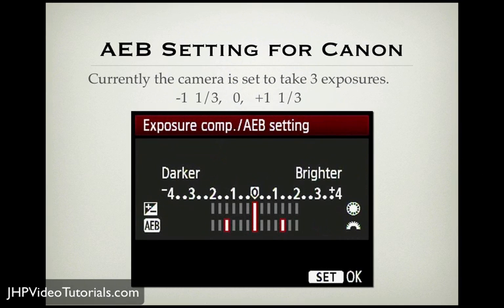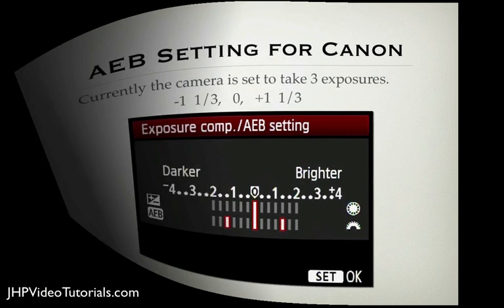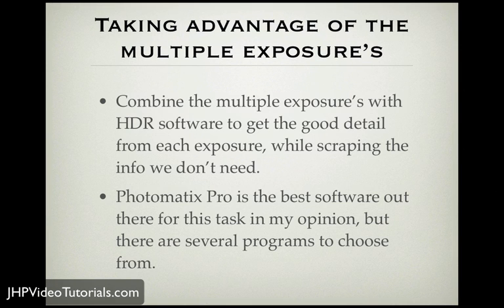Here's what it looks like on the camera screen when you set auto exposure bracketing. When the camera fires, it takes a negative one and one-third exposure, a zero exposure (normal exposure), and a plus one and one-third exposure shot. To take advantage of those multiple exposures, once you get them, you have to combine them with HDR software. The best software out there, in my opinion, is Photomatix Pro. However, Nik Software just came out with an HDR software as well that looks pretty good — I'm going to try it out in the next couple of weeks.